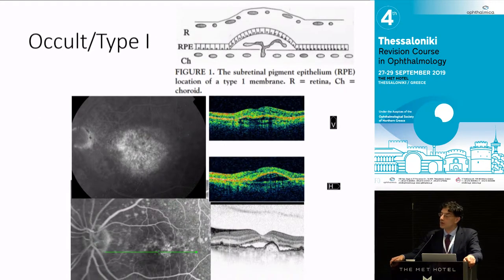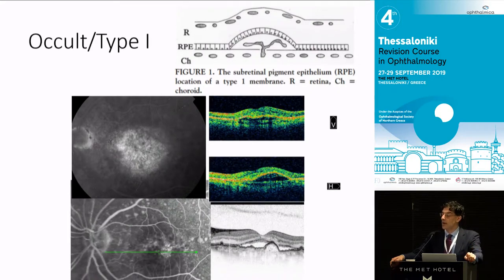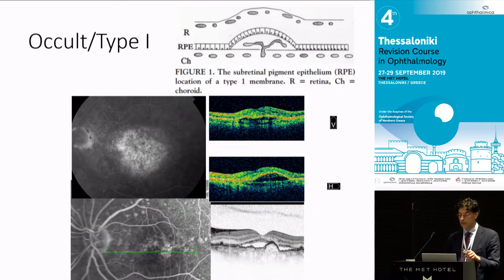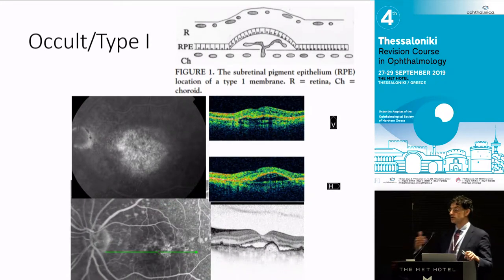Type 1 choroidal neovascularization is the form you normally get in aging patients who have an aging RPE. When the neovascular process starts, it can find a plane between Bruch's membrane and the RPE. The OCT correlate shows elevated RPE with subretinal medium hyperreflective material, and it may then have an exudative change over the top.